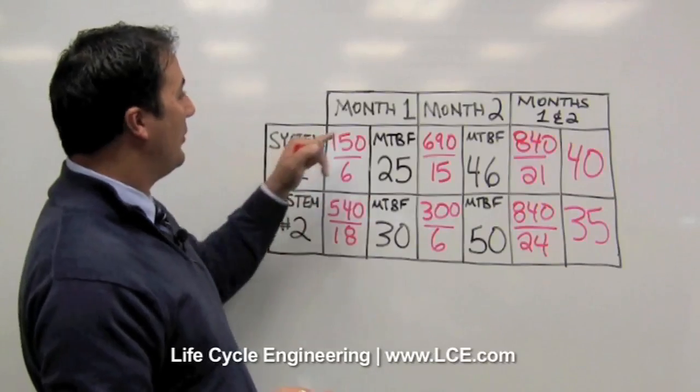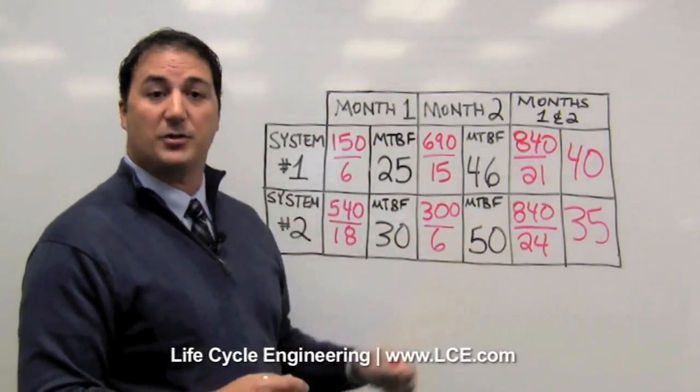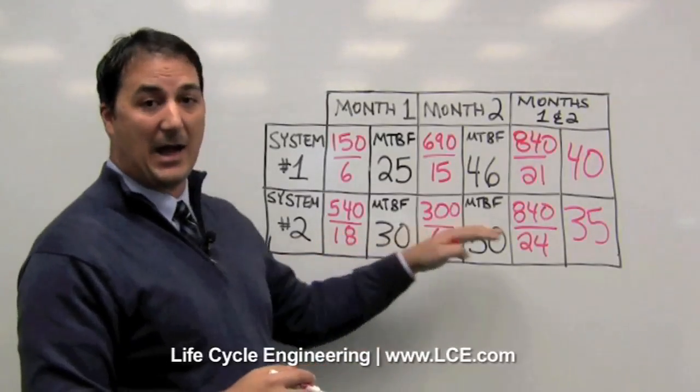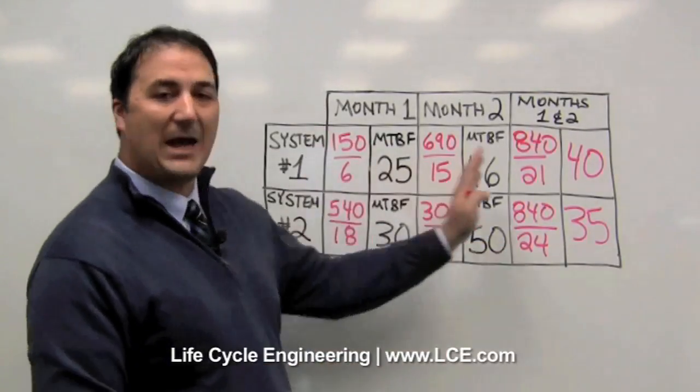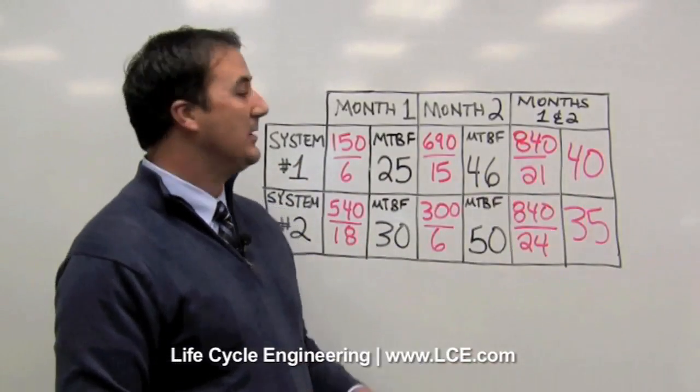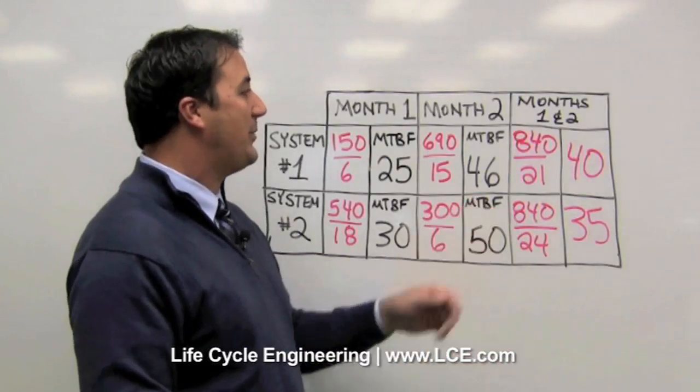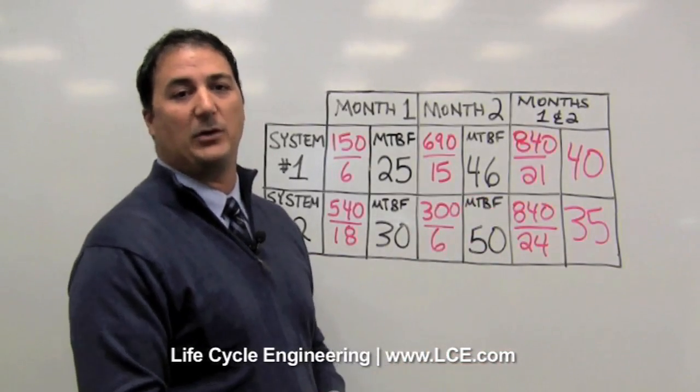And what we can see is that within months one and two, system two had a larger mean time between failure, indicating higher reliability, but when you combine the two months together, it actually turns out that system one had the higher mean time between failure. So how does this affect the way that we devote our resources, and what kind of pitfalls have we learned about using mean time between failure?